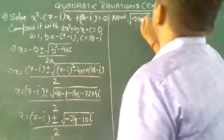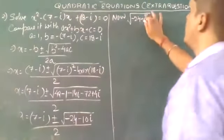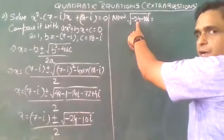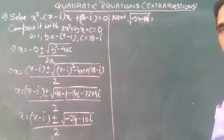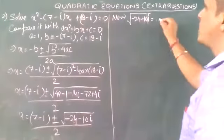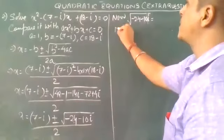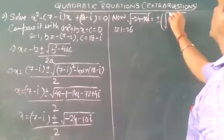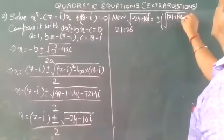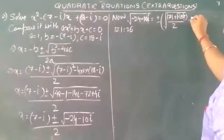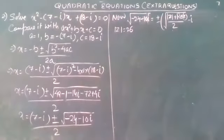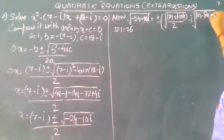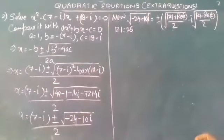Now we need to find √(-24 - 10i). First, find the modulus: |z| = √(24² + 10²) = √(576 + 100) = √676 = 26. So modulus z = 26. Using the square root formula: ±[√((|z| + Re(z))/2) - i·√((|z| - Re(z))/2)]. Since Re(z) = -24, the sign in front of the iota term is negative (minus is still there).